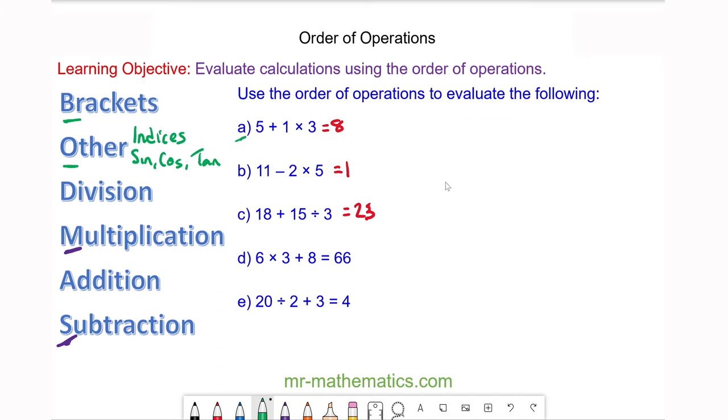With question d, if we apply the order of operations to 6 × 3 + 8, we will do the multiplication first, which is 18, and we add 8 to get 26, but we need 66. So we're going to insert a pair of brackets into our calculation. If we put our brackets before the 3 and after the 8, we have 6 × (3 + 8), which we do first, and that is 11. 6 × 11 is 66, so our brackets go here and here.